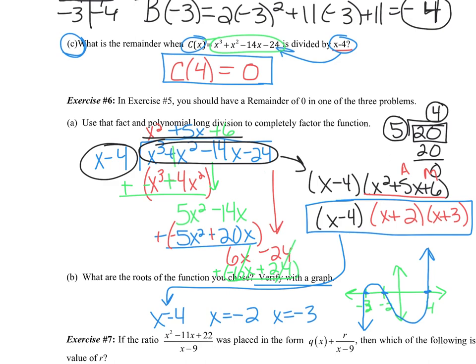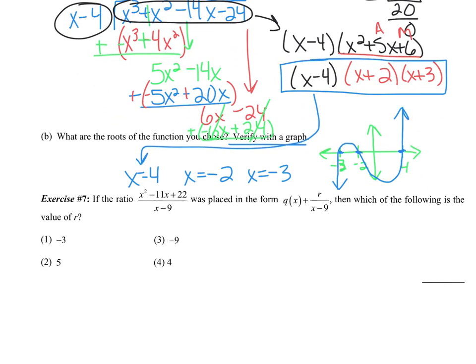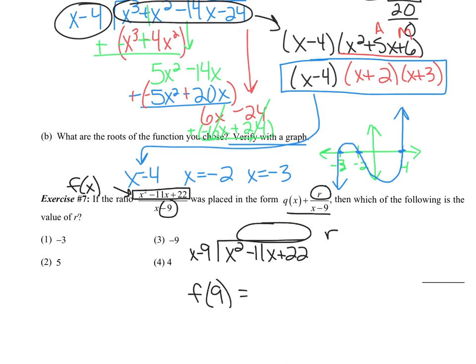The last question is just another application of the remainder theorem. It says, if this ratio was placed in this form, so that's our quotient remainder form, which of the following is the value of r? So basically they're saying, if I did the polynomial long division and I got an answer and I had a remainder over here, what would that remainder be? So this is kind of sneaky, but it is an application of the remainder theorem. If I call this f(x), then if I do f(9), we're looking for the remainder, that should give me the remainder when I divide by x - 9.